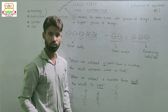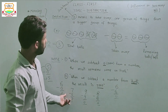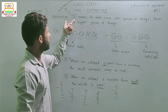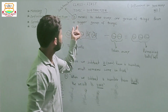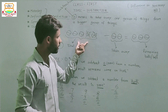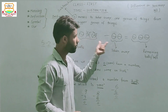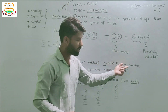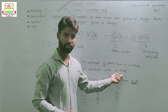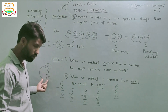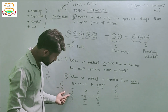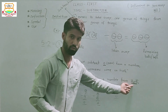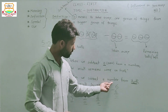Now let us revise once again. Definition of subtraction: it means to take away one group of things from a bigger group of things. When we subtract zero from a number, the result remains the same: five minus zero equals five, six minus zero equals six, seven minus zero equals seven.